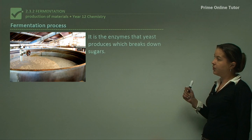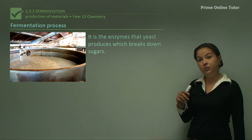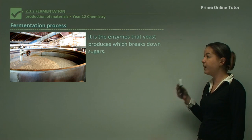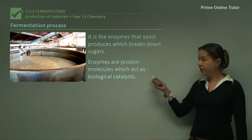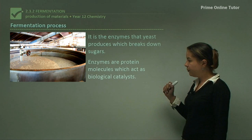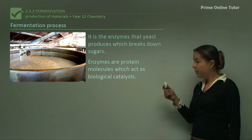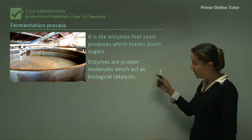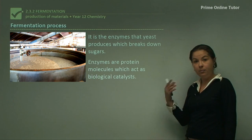Looking at the process: it's the enzymes that yeast produce which breaks down the sugars. It's the action of a living organism which is getting this reaction to move forward. Enzymes are protein molecules and they act as biological catalysts. In previous lessons we've discussed metal catalysts, but we can also have biological catalysts such as here in fermentation. Enzymes are simply a type of protein that the body produces.